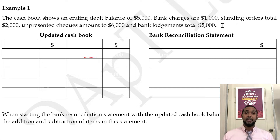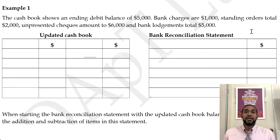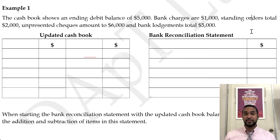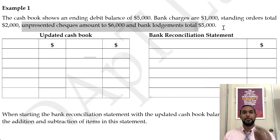If you are familiar with the content from the previous videos, you would know that bank charges and standing orders are items found in the bank statement but not in the cash book. So those are the items we will use to update the cash book. The un-presented checks and bank lodgements are found in the cash book but not in the bank statement, and hence we use them in the bank rec.